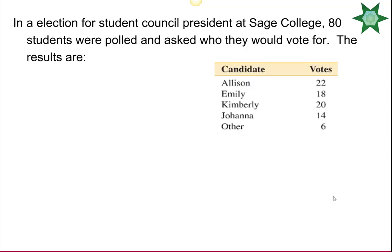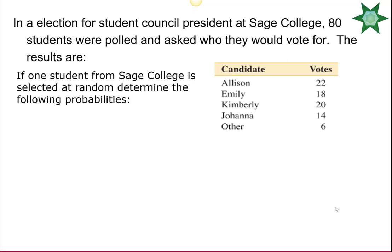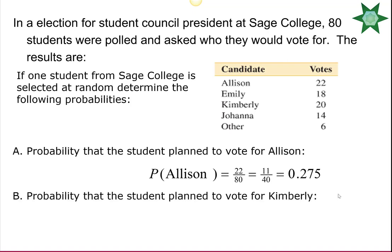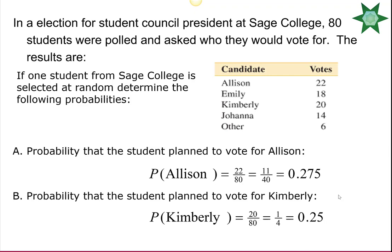In an election for student council president at Sage College, 80 students were polled. The probability a student planned to vote for Allison — from the table, 22 students selected her — is 22 divided by 80, which simplifies to 11 over 40, or 0.275. The probability of voting for Kimberly: 20 students selected her, so 20 over 80 simplifies to 1/4, which is 0.25.